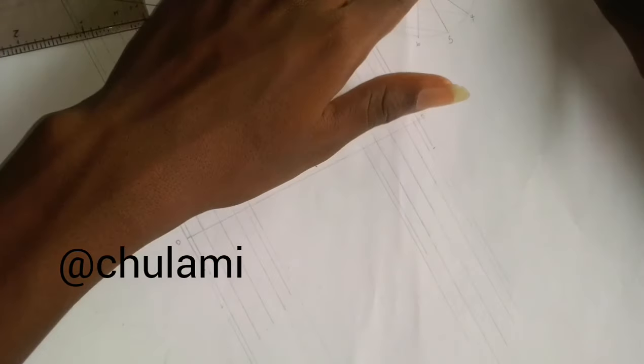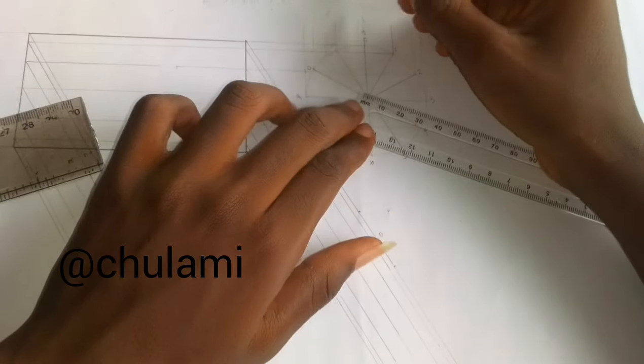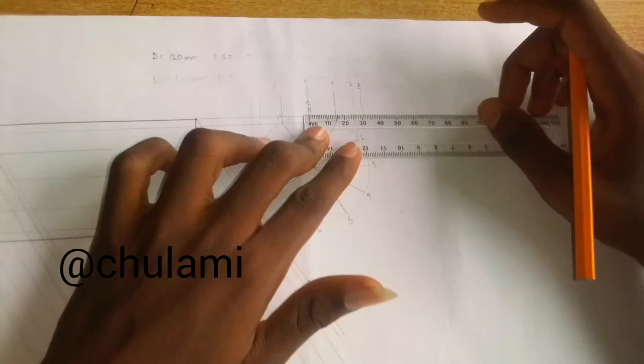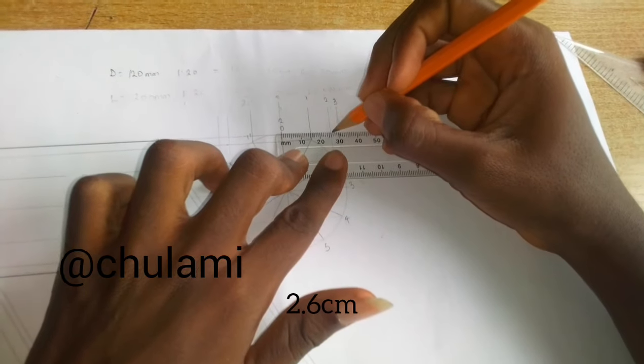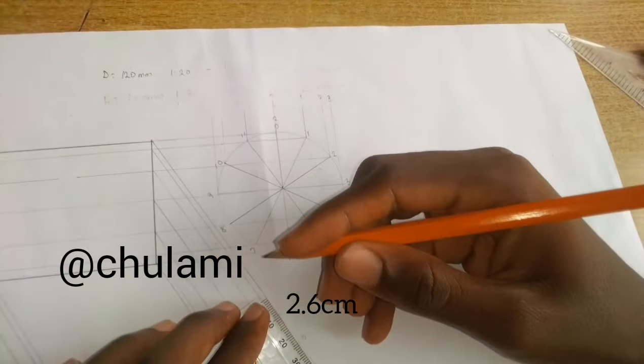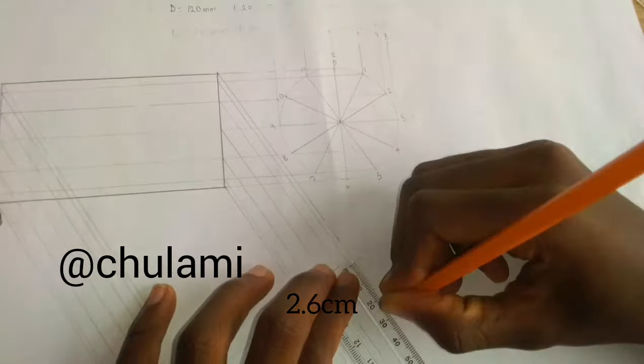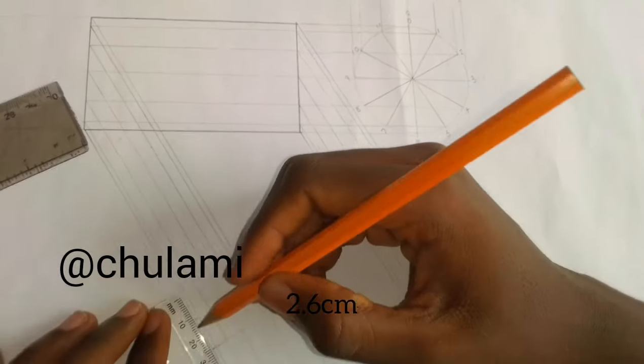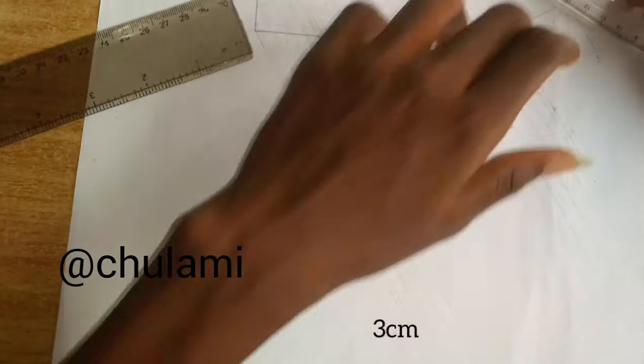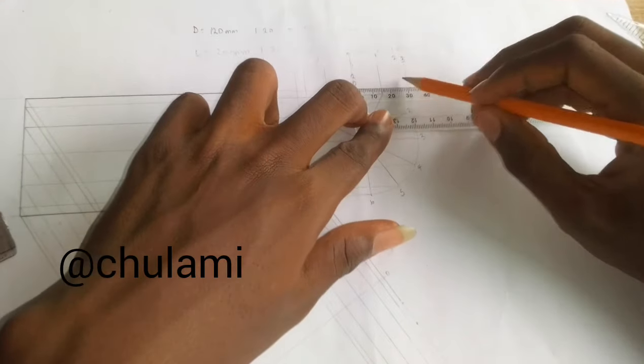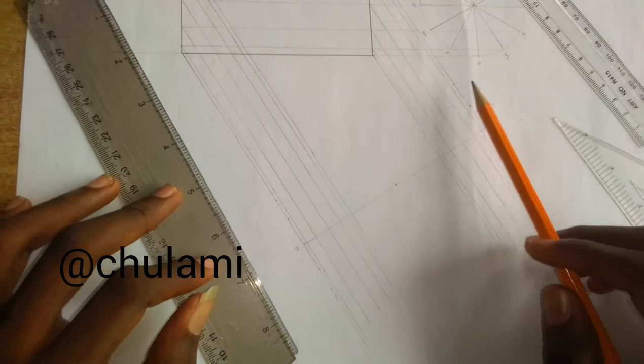You measure again from 0 to line 2, which is 2.6. Do the same here: measure 2.6 upward and 2.6 downward. Same thing here too: 2.6. You should measure here too, which is 3.3. Measure 3.3 up and 3.3 down. So we have gotten our points.